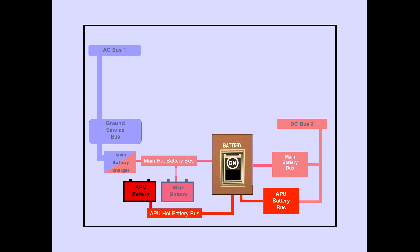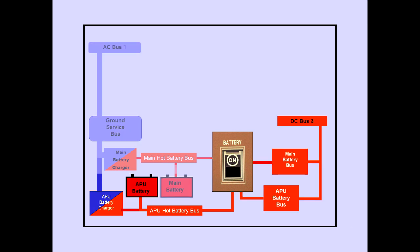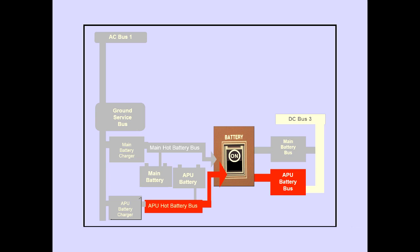Two buses can be powered from the APU battery: the APU hot battery bus and the APU battery bus. The APU hot battery bus is directly connected to the APU battery and powers the APU controls. The APU hot battery bus is normally powered by AC bus 1 through the ground service bus and APU battery charger. Normally, DC bus 3 powers the APU battery bus. When DC bus 3 is unpowered with the battery switch on, the APU hot battery bus powers the APU battery bus.